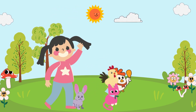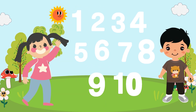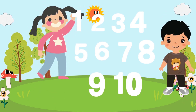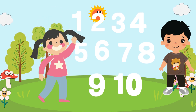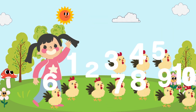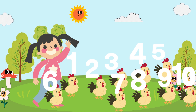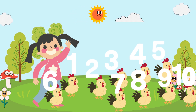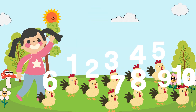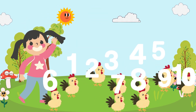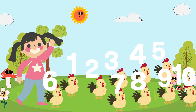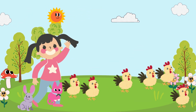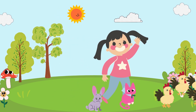Why did you let it go? 1, 2, 3, 4, 5, once I caught a fish alive, 6, 7, 8, 9, 10, then I let it go again. Why did you let it go?